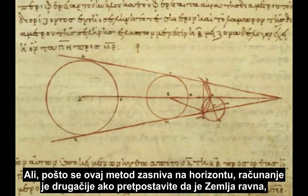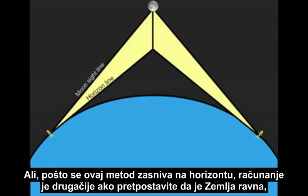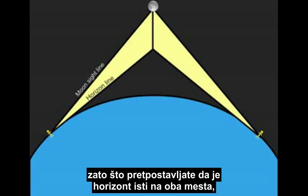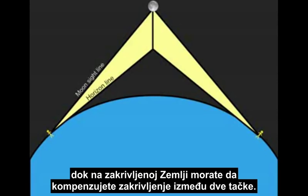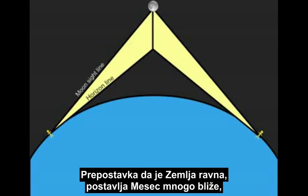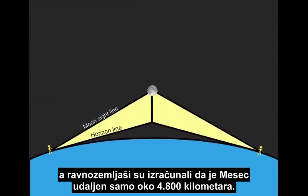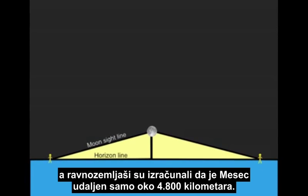But since the method uses the horizon, the calculation works out quite differently if you assume the Earth is flat, because you then assume the horizon is the same in both locations, while on the curved Earth you need to compensate for the curve between the two points. So assuming a flat Earth puts the Moon much closer, and flat Earthers calculate the Moon is only about 3,000 miles away.